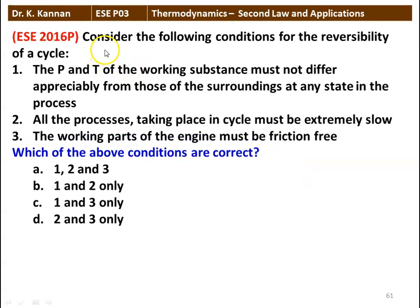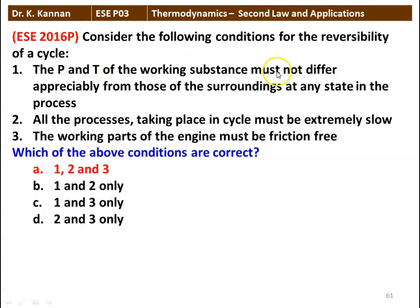Next question: Consider the following conditions for the reversibility of a cycle: (1) The pressure and temperature of the working substance must not differ appreciably from those of the surroundings at any state in the process; (2) All processes taking place in the cycle must be extremely slow; (3) The working part of the engine must be friction free. Which of these conditions are required for reversibility? All three conditions are required. The pressure and temperature must not differ appreciably from the surroundings, all processes must be extremely slow, and all parts must be friction free.